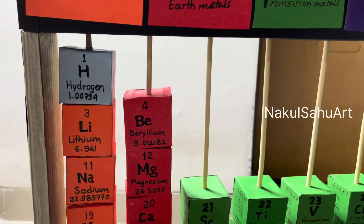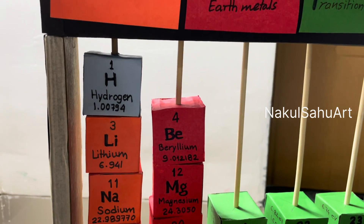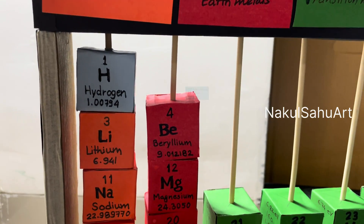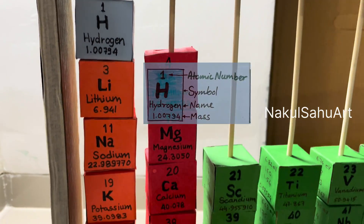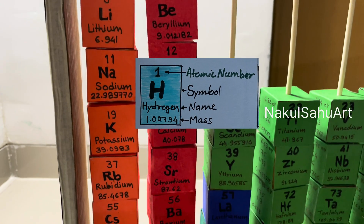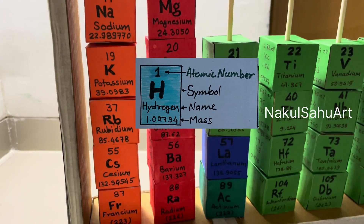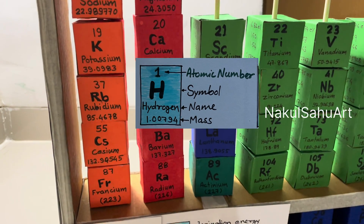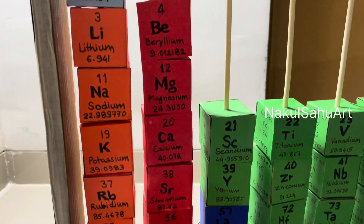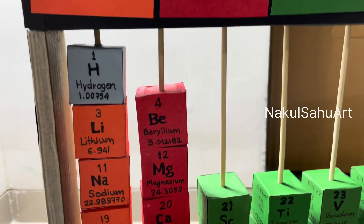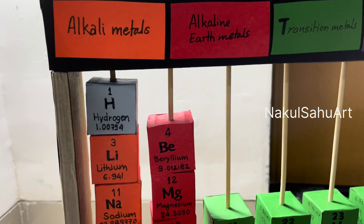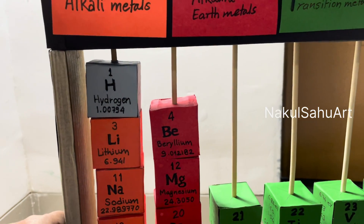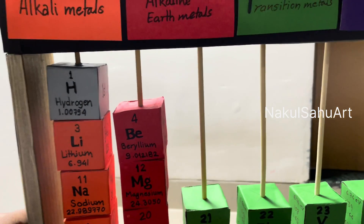On the first side, we have the elemental basics: the symbol, name, atomic number, and atomic mass. A quick glance provides a snapshot of the element's identity.